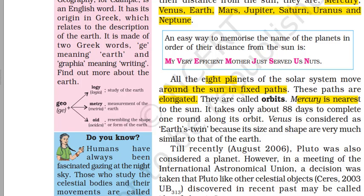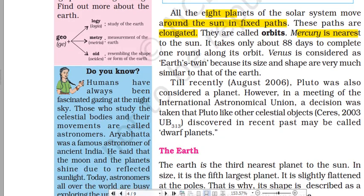Until recently — before August 2006 — Pluto was considered a planet. However, in a meeting of the International Astronomical Union (IAU), a decision was taken that Pluto, like other similar celestial objects, would be known as a dwarf planet rather than a planet.